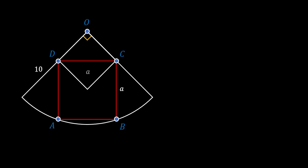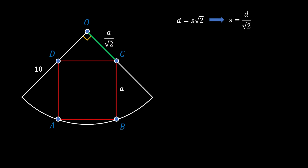We know that line DC equals A, and it also represents the diagonal of the small white square. The diagonal of a square equals the side times √2, so the side equals the diagonal divided by √2. Applying this to our white square, OC represents the side, so OC equals A over √2. We can then pull the diagonal AC of the red square, and since the side is A, the diagonal AC equals A√2.